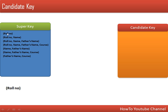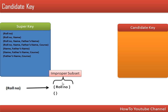First we will check the first super key — roll number. To check whether this is a candidate key, we need to find its proper subset. Every set has two improper subsets: the set itself and the empty set. There is no proper subset for this single attribute, so it cannot be divided further. Since it is already a super key with no proper subset, roll number will be considered as a candidate key.